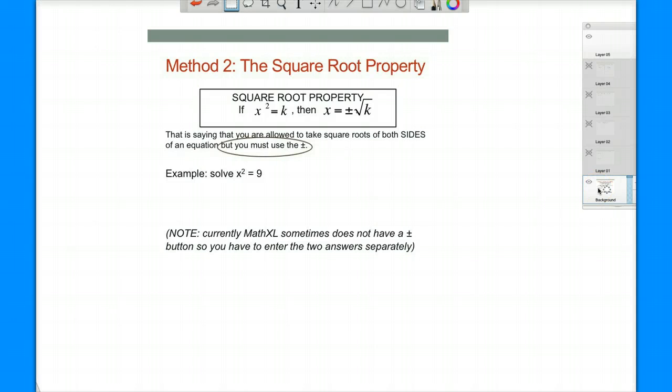Okay, we are going to do our second method to solve quadratic equations. This method uses the square root property. Remember the first one used the zero factor property. This one uses the square root property.